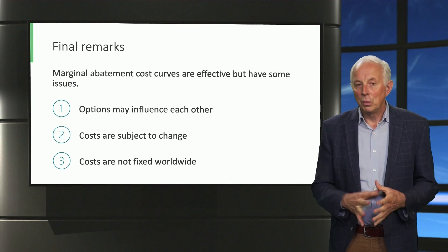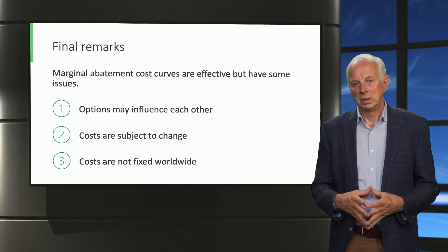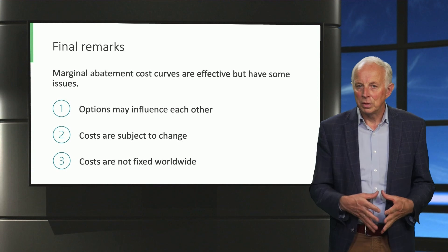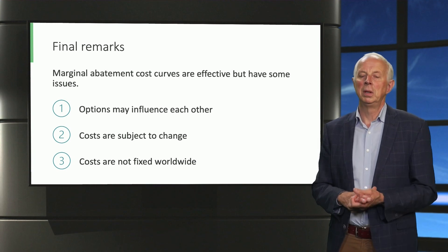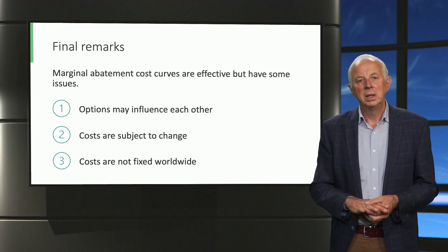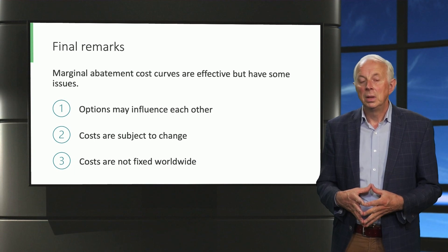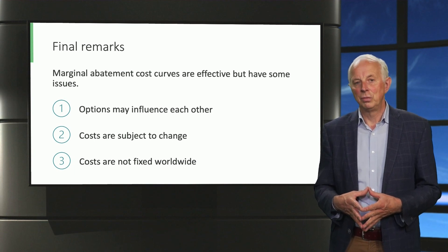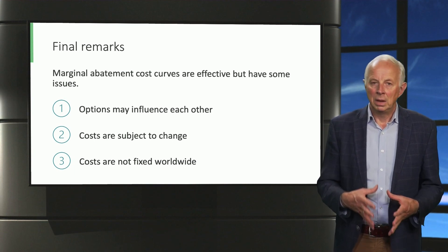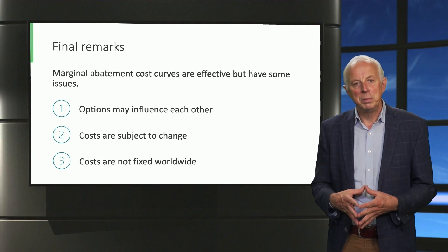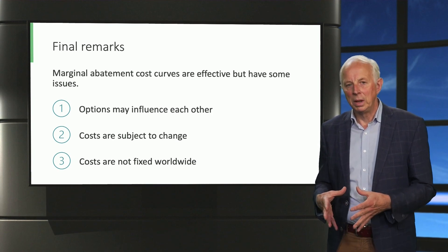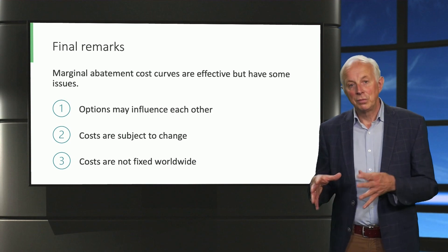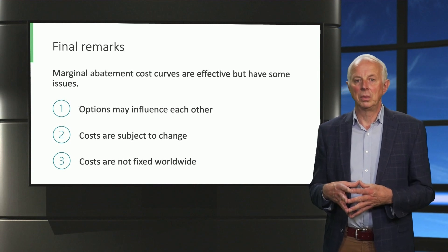Finally, there will always be variation in costs. They may be different in different situations. For example, the cost of solar energy will differ country by country due to differences in level of insulation. Another example of cost differences may be caused by scale effects, e.g., small and large companies may have different cost levels for the same technology.